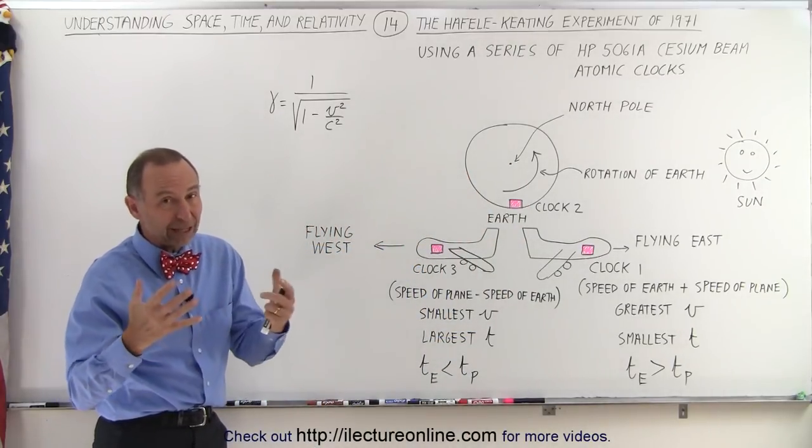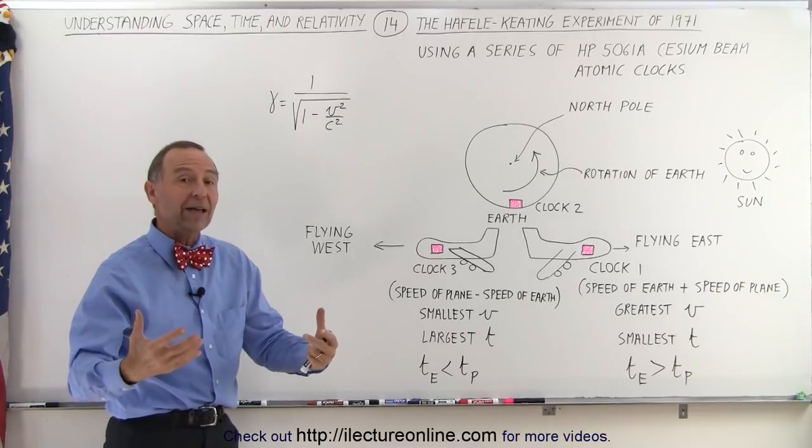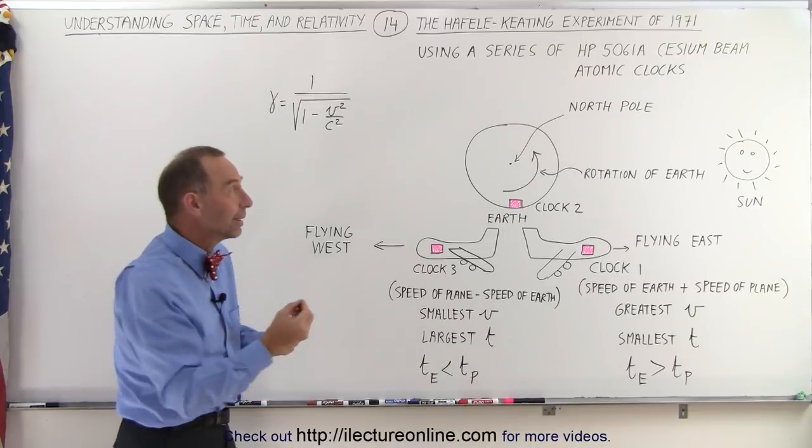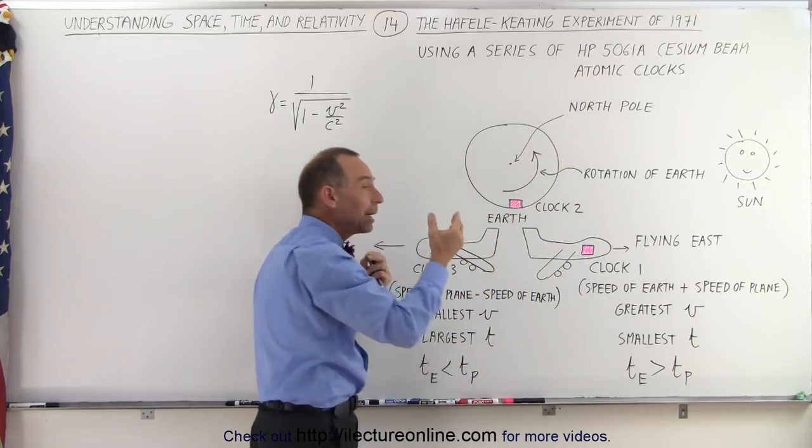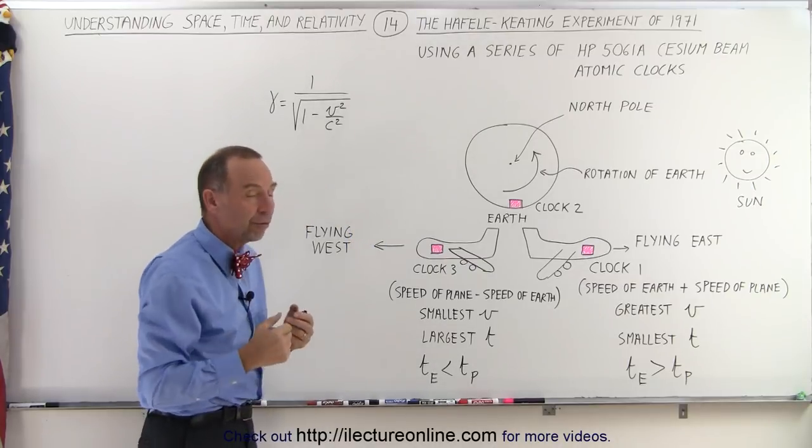Now even though planes do not fly anywhere near the speed of light, they do fly relatively fast, hundreds of miles per hour, and with an atomic clock that can measure time very accurately, we should be able to notice a difference depending upon which direction the plane flies.